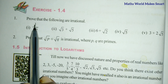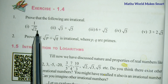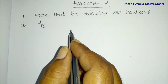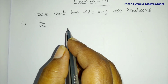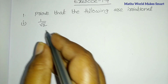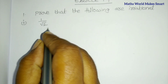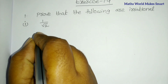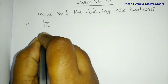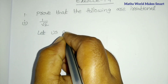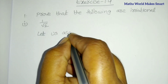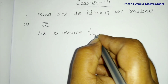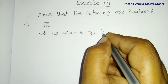Problem 1: 1 by root 2. This is an irrational number. We will use the contradiction method. First of all, let us assume 1 by root 2 is rational.